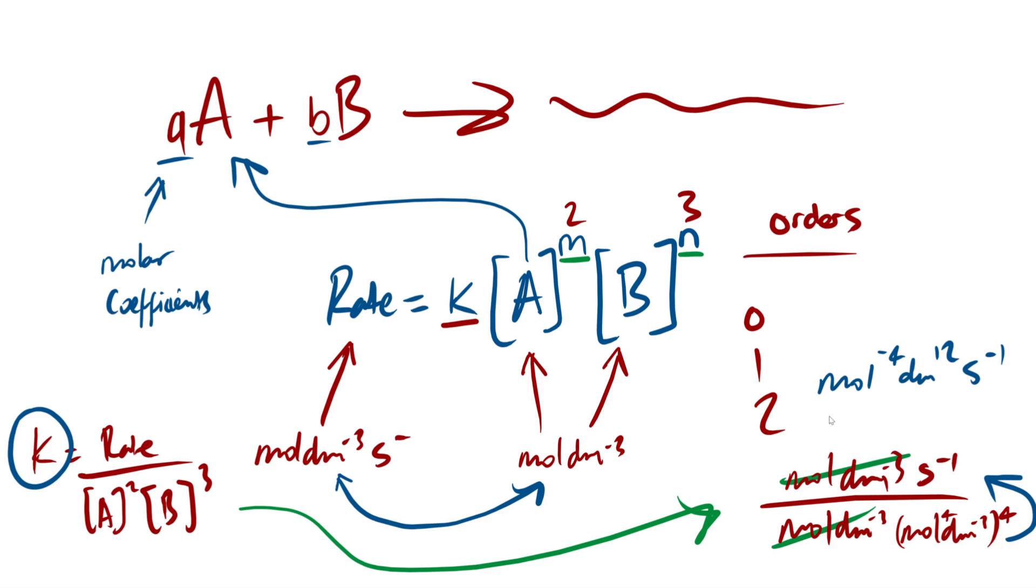Now, in reality, it shouldn't be written like this, but AQA accepts it. In reality, it should be decimetre to the 12 per mole to the 4 per second. And let's say, for example, in a question they ask for, what is the total order? What is the total order of reaction? So all you do here is you add up what this order is, what this order is, in which case it's 2 plus 3. Therefore, the total order is 5. Easy piece right there.